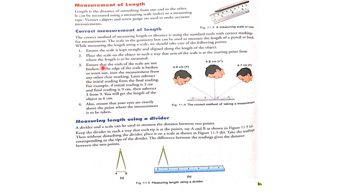Number three: ensure that the ends of the scale are not broken. If the edge of the scale is broken or worn out, start the measurement from any other clear marking, then subtract the initial reading from the final reading. For example, if the initial reading is 3 cm and the final reading is 9, then 9 minus 3 gives the length of the object as 6 cm.